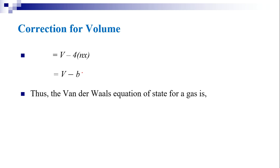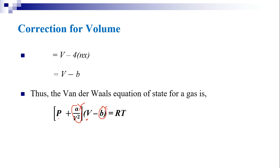Thus, by making corrections for pressure and volume in the ideal gas equation, Van der Waals arrived at a new equation: (P + A/V²)(V − B) = RT. Here, A/V² is the pressure correction term and B is the volume correction term. Thus, the Van der Waals equation of state for a gas is (P + A/V²)(V − B) = RT.